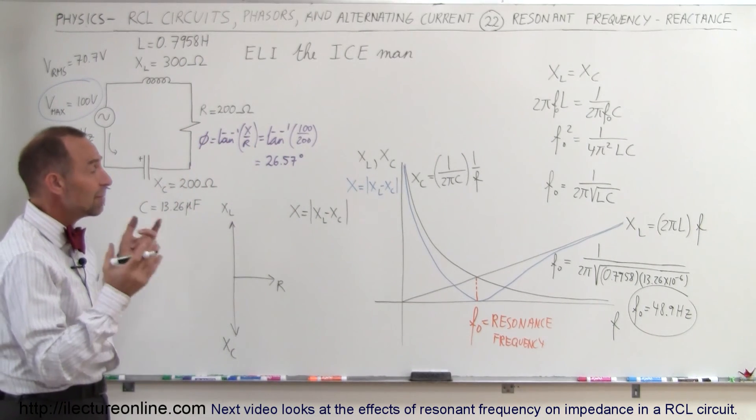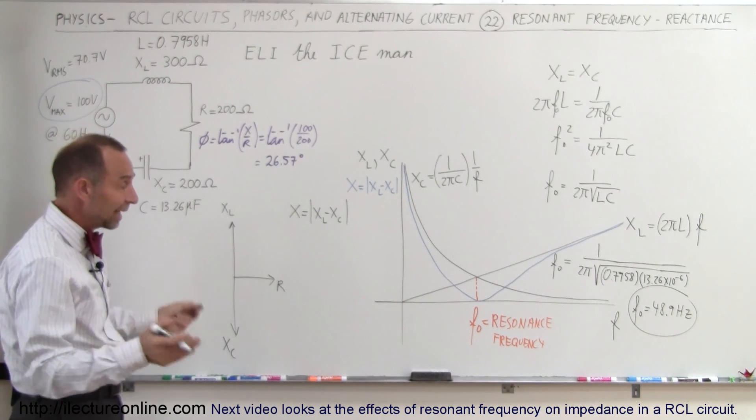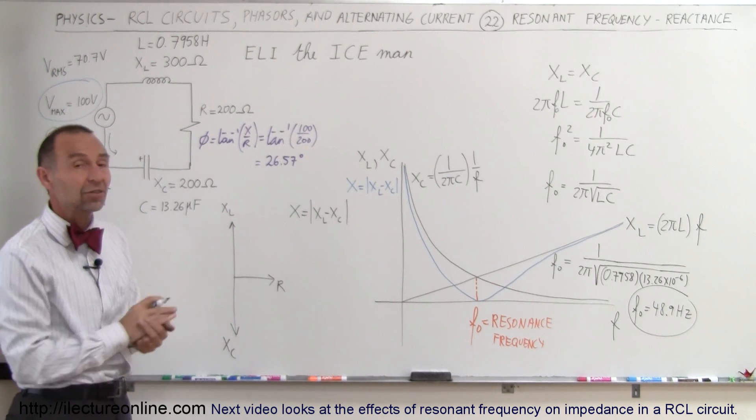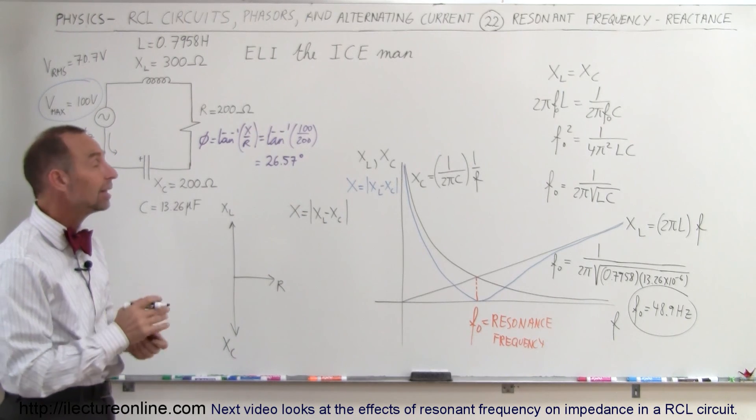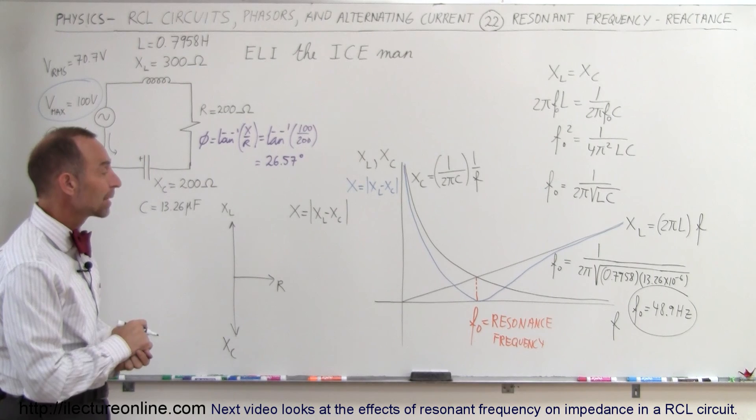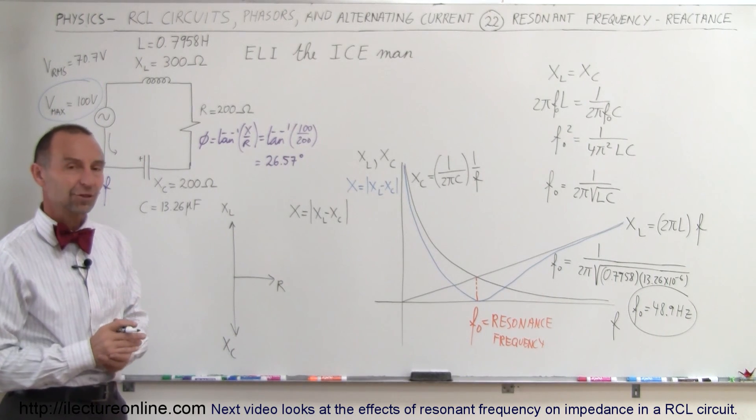Resonance frequency means that the X sub L equals X sub C, so they cancel each other out. There's no reactance in the circuit. To find that value, set the two equal to each other and solve for the frequency, which is then the resonance frequency. In the next video, we'll see how that then affects the total impedance of the circuit.